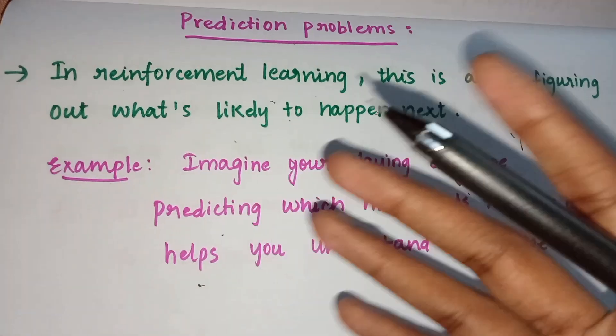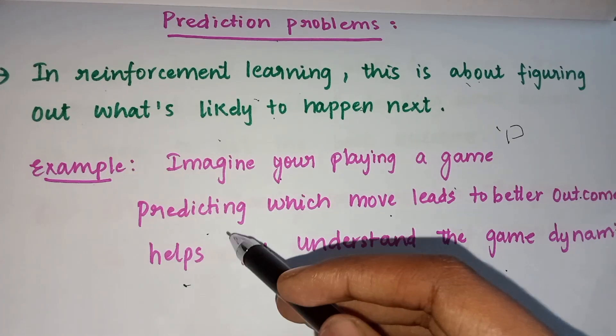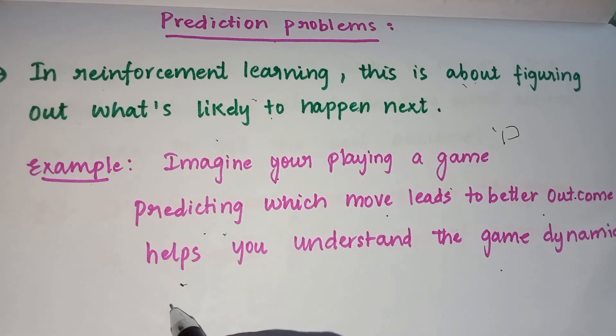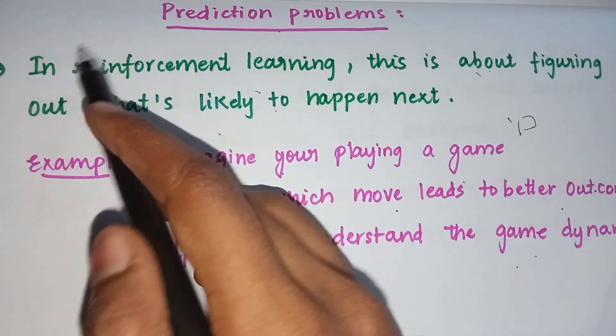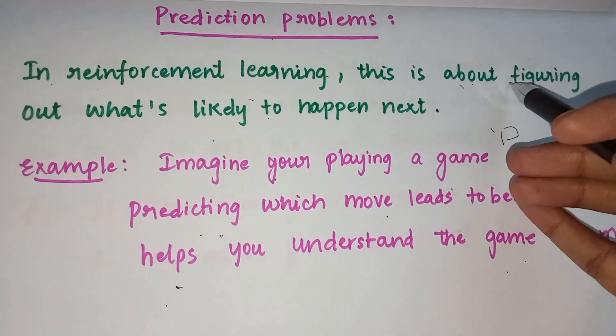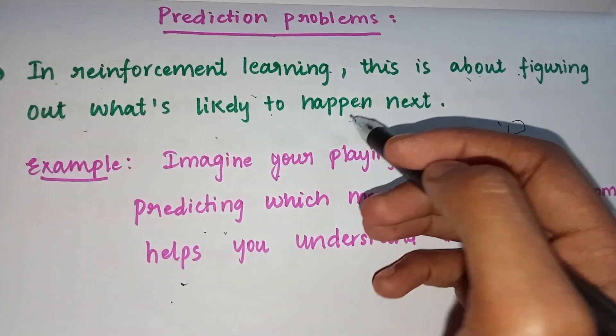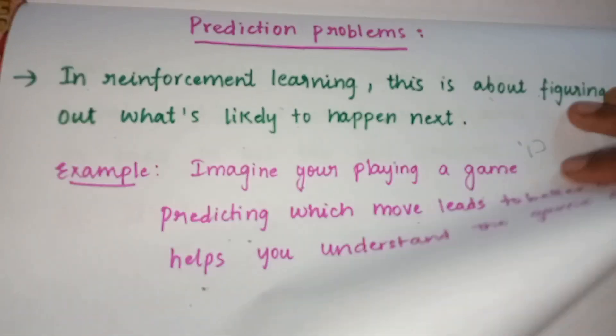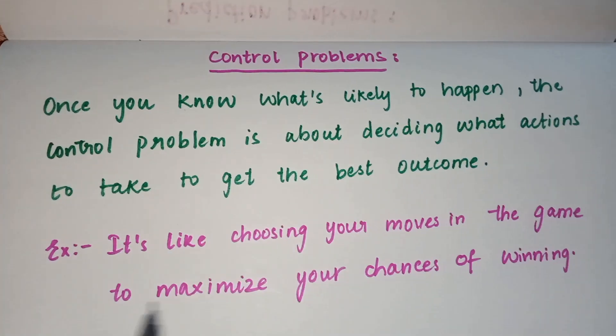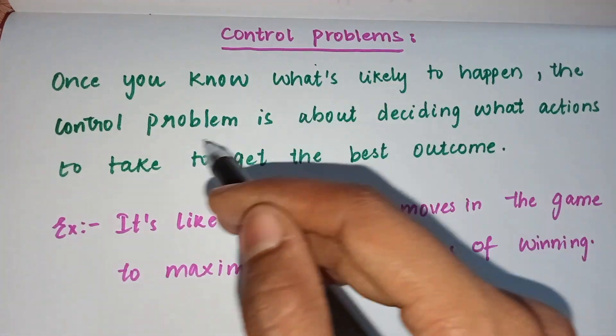You're predicting what happens next. In reinforcement learning, this is about figuring out what's likely to happen next. Next is control problems. These control problems are about deciding what actions to take once you know what's likely to happen.